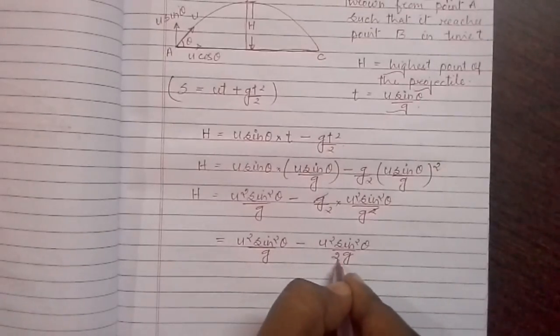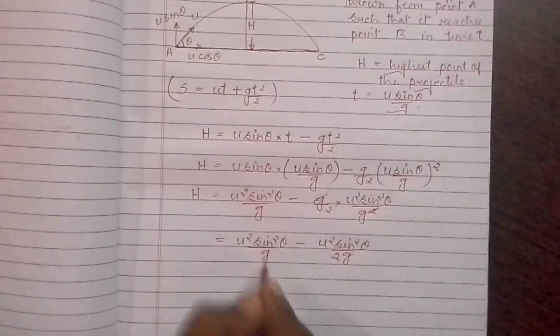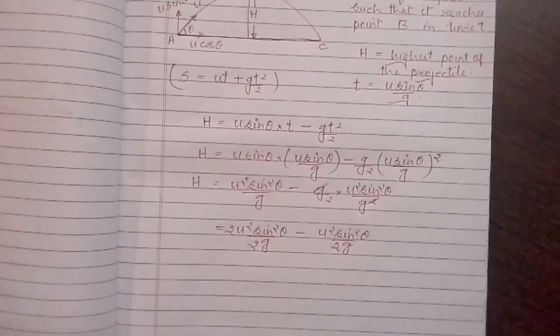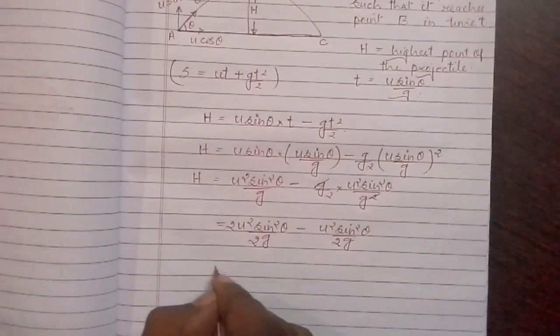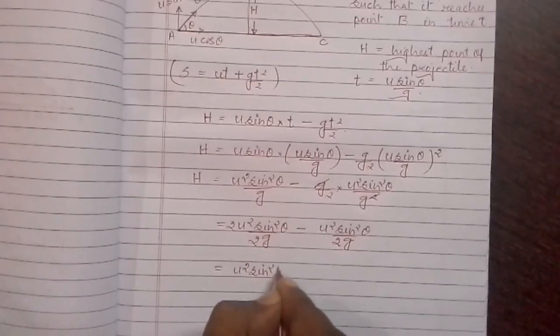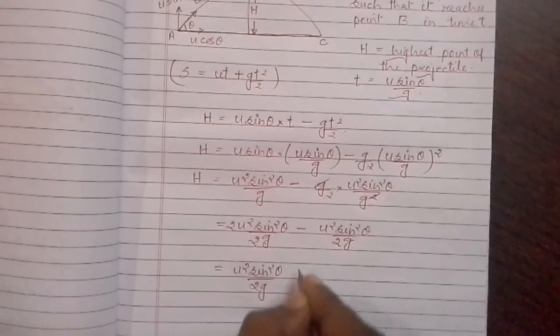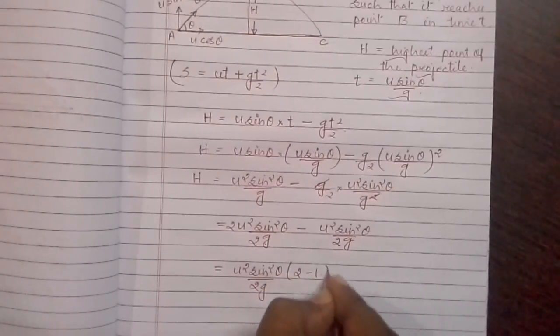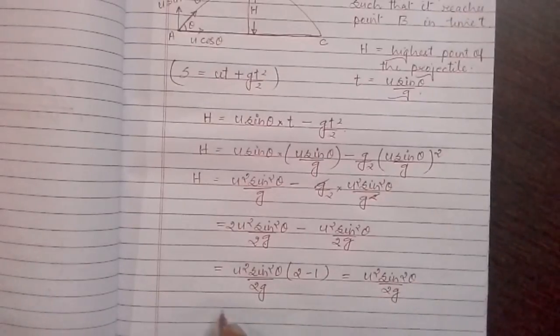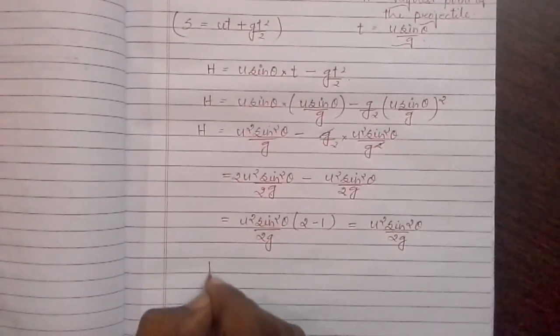Here we have denominator 2 and here we have 1, so we can multiply and divide by 2. Now taking out u square sin theta by 2g common, we can write u square sin theta by 2g times 2 minus 1, which equals u square sin theta by 2g.